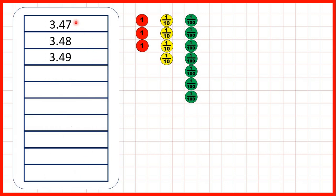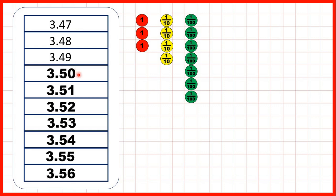Now 3.47, 3.48, 3.49. What are our next seven numbers? Well we're counting in hundredths. And we can see 3.50 is usually just written as 3.5, because we don't need zeros on the end of decimal numbers.